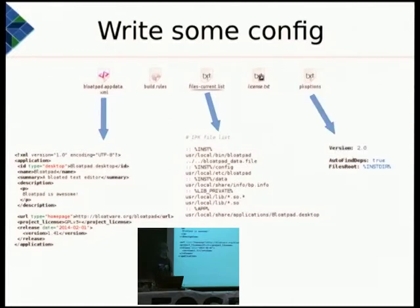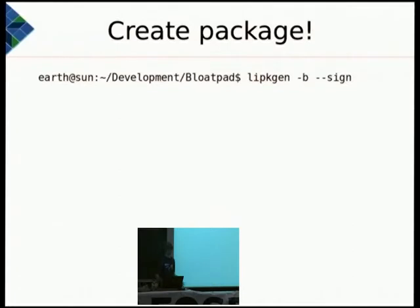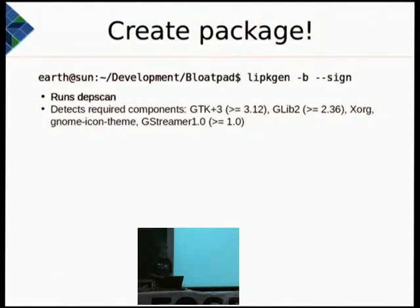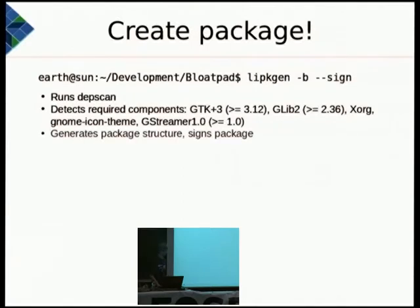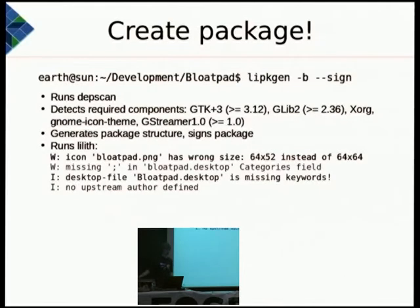You also need to write a pk-options file, which defines how the package creation process will be done and which version of the packaging standard to use. Then you generate your package, which automatically runs devscan — a small tool that detects all dependencies your application has and matches them with components using the component interface definition. For example, in this case we detect GTK3, GLib, Xorg, an icon theme, and GStreamer because this thing is called Bloatpad.